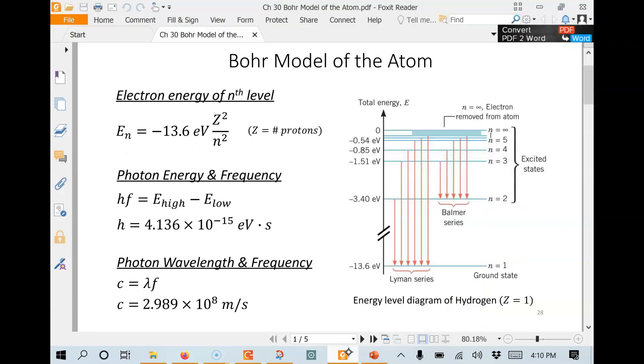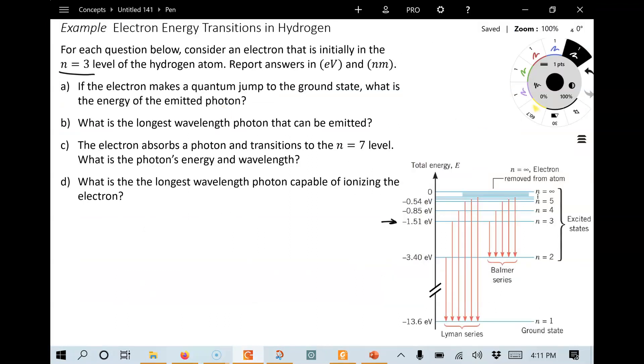So looking at the Bohr model, here's our equation. En is equal to minus 13.6 eV times Z squared over n squared. Z is the number of protons, so you could have like two protons in a single electron, three protons, etc. Always one electron. But this is hydrogen, there's one proton. So we can write this as